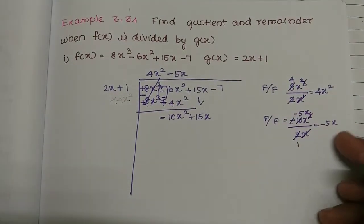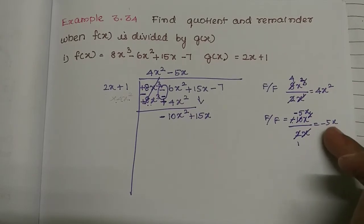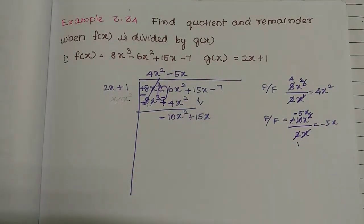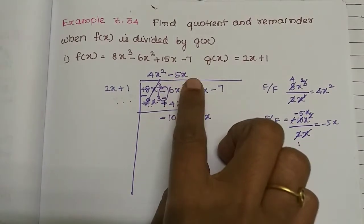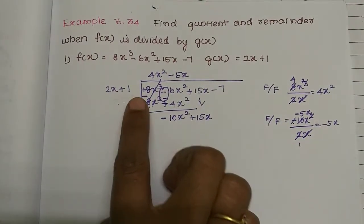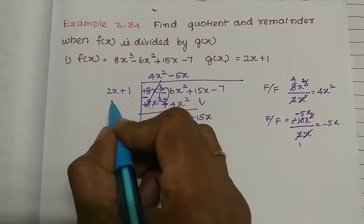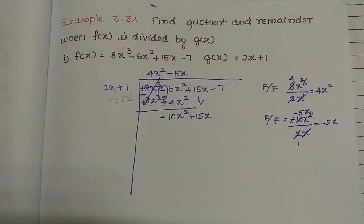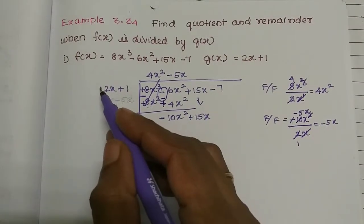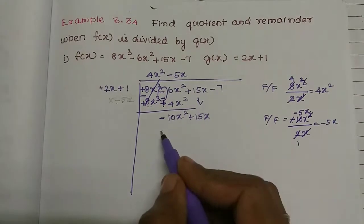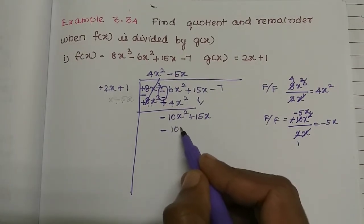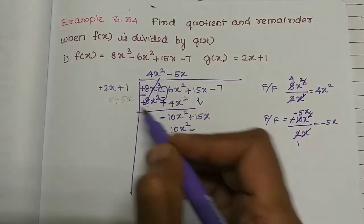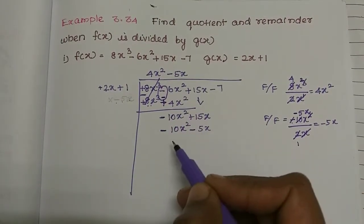Minus 5x is the next quotient term. Now multiply minus 5x by 2x plus 1. This is plus into minus, so minus. 2 fives are 10, x into x is x squared, so minus 10x squared. Then plus into minus is minus; 1 into 5x is 5x, so minus 5x.